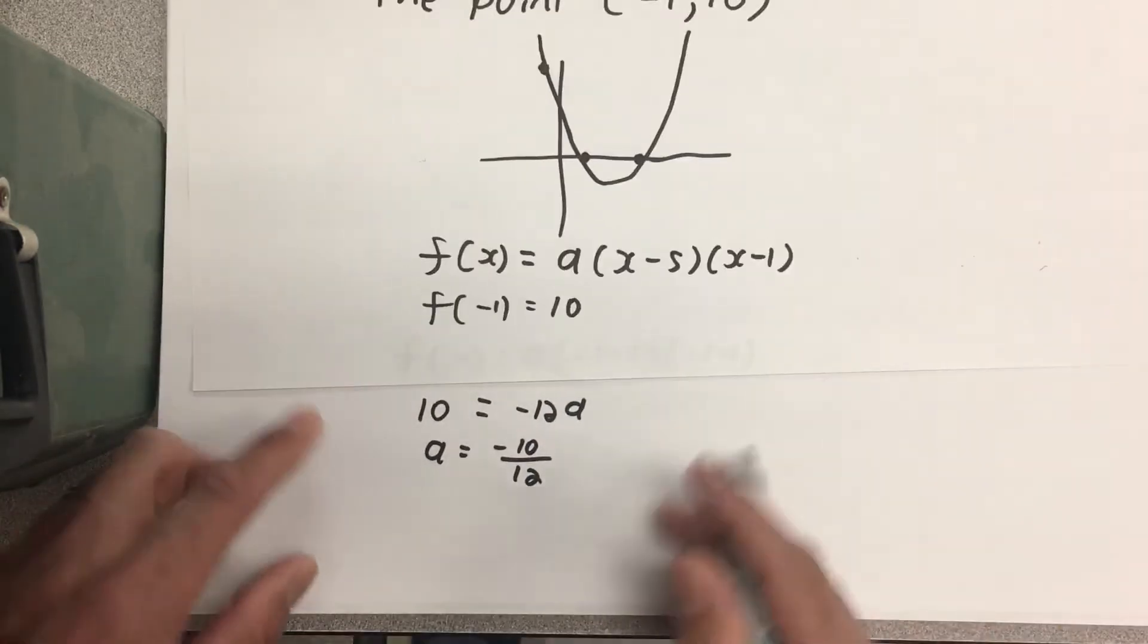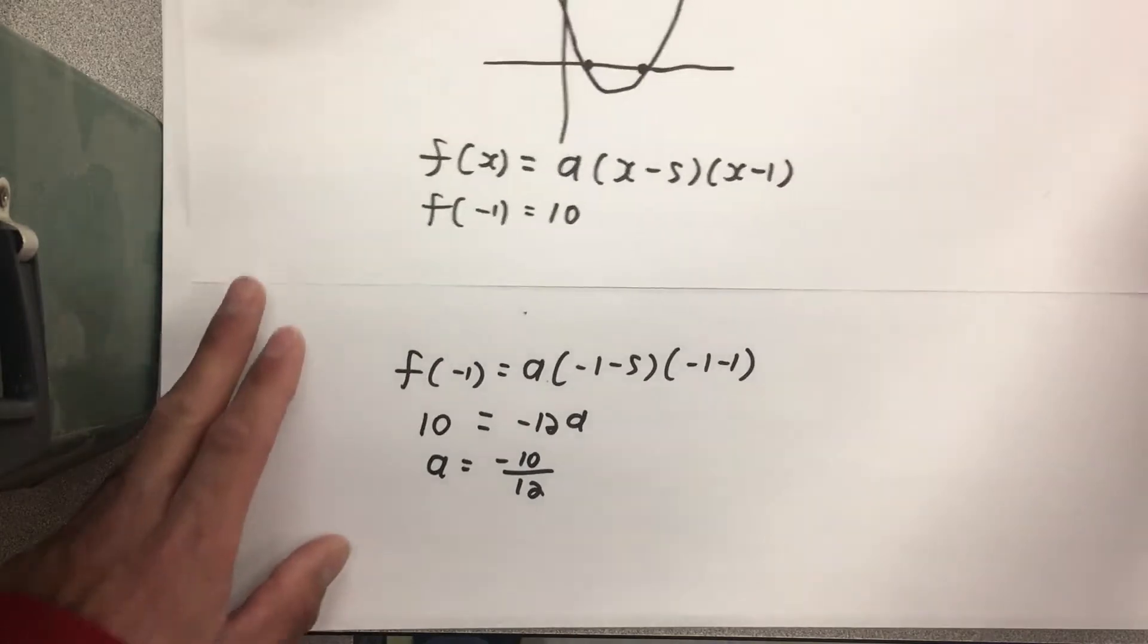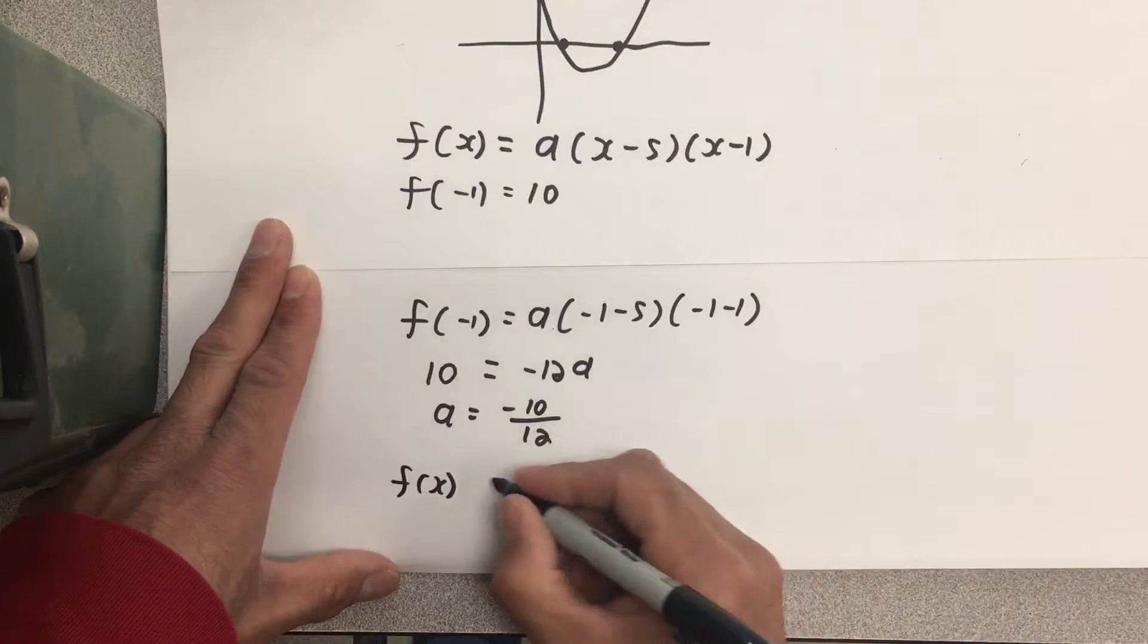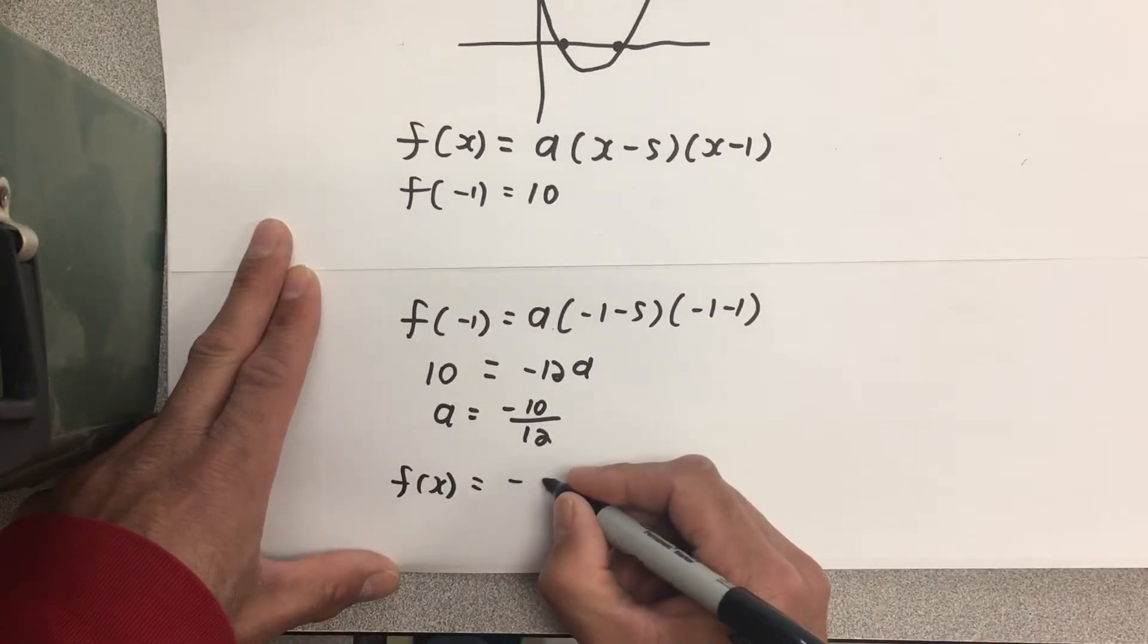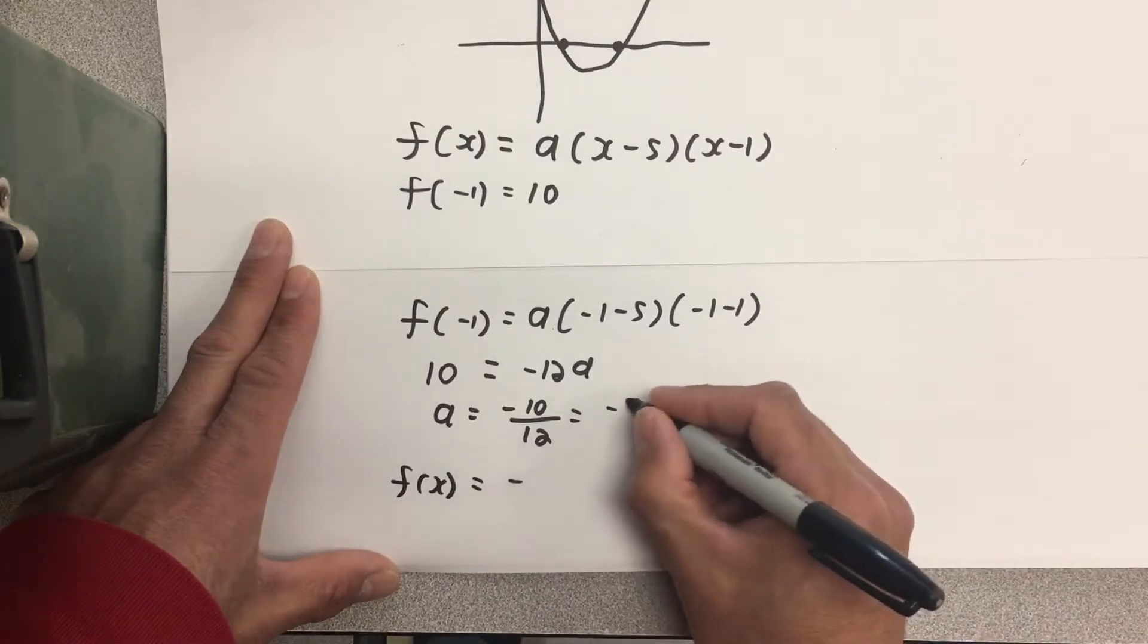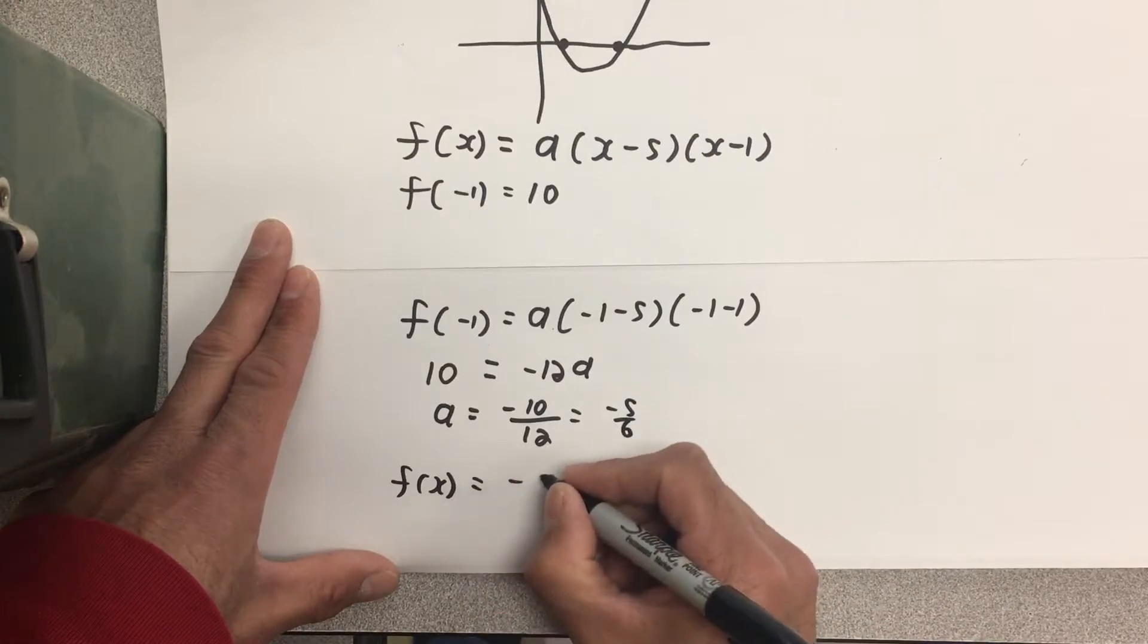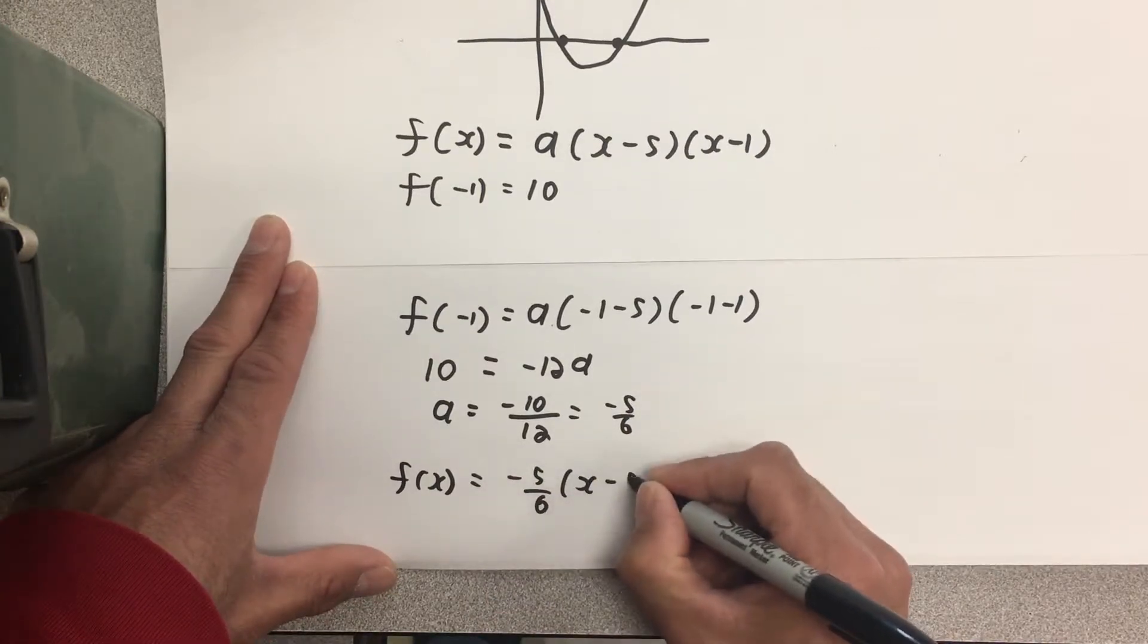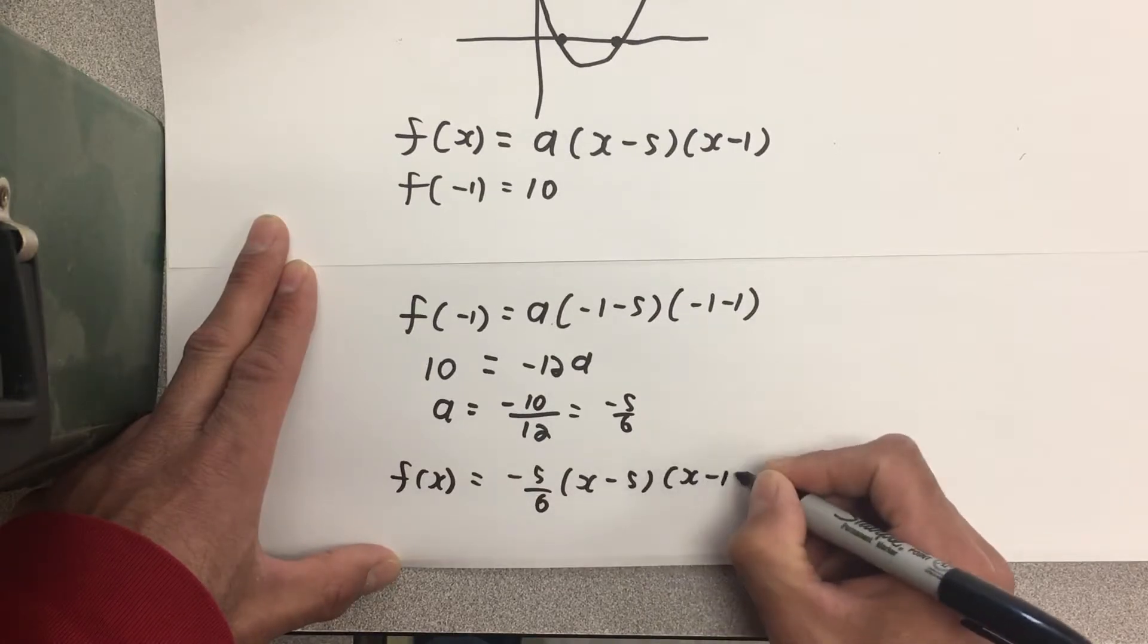Finally, I can write out the entire function as -10 over 12, which by the way is -5 over 6, times (x - 5) times (x - 1).